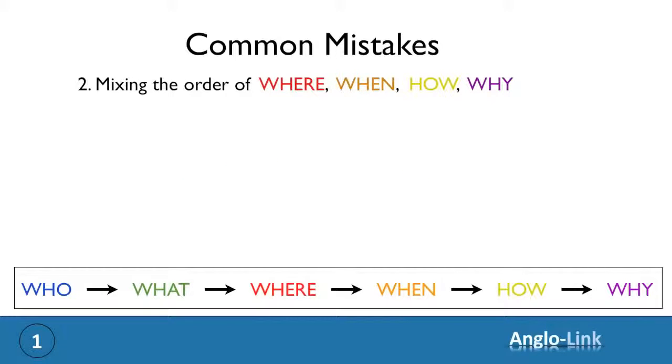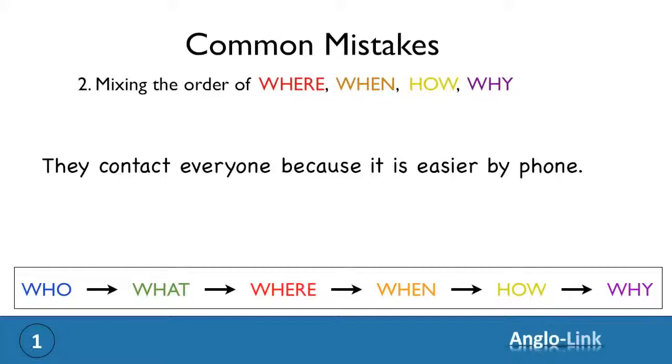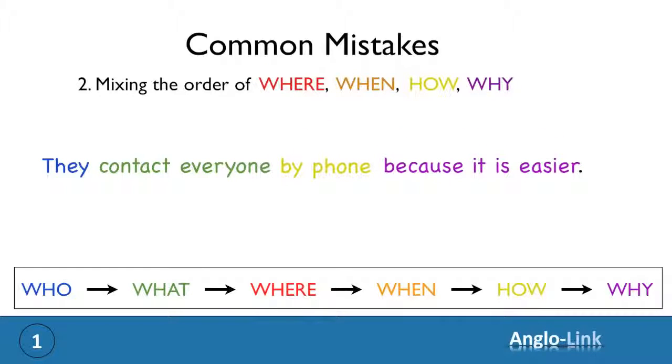Let's look at a third example. They contact everyone because it's easier by phone. If you look at the colours, you notice that the why has come before the how. So let's switch them. They contact everyone by phone because it's easier.